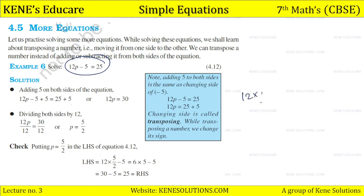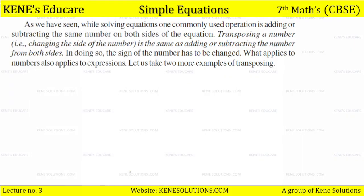Changing side is called transposing. While transposing a number, we change its sign. So here in the LHS, look: 12 multiplied by 5 upon 2 minus 5 equals 25 on the RHS. So here our method is correct.